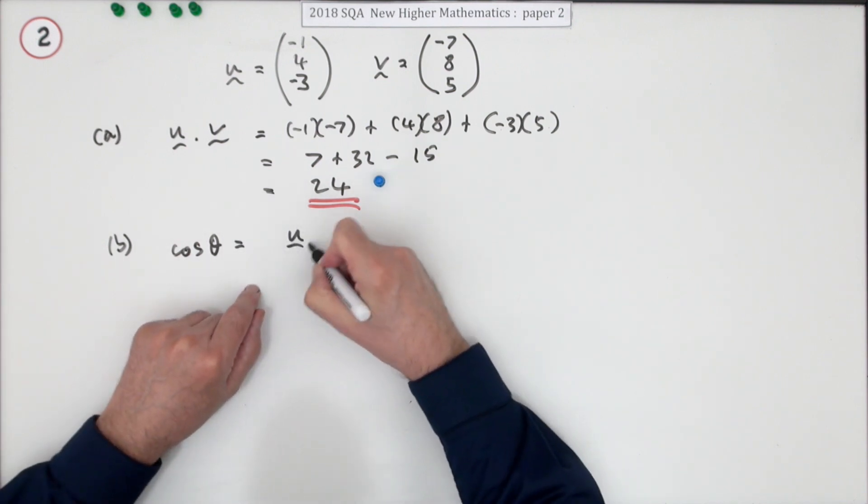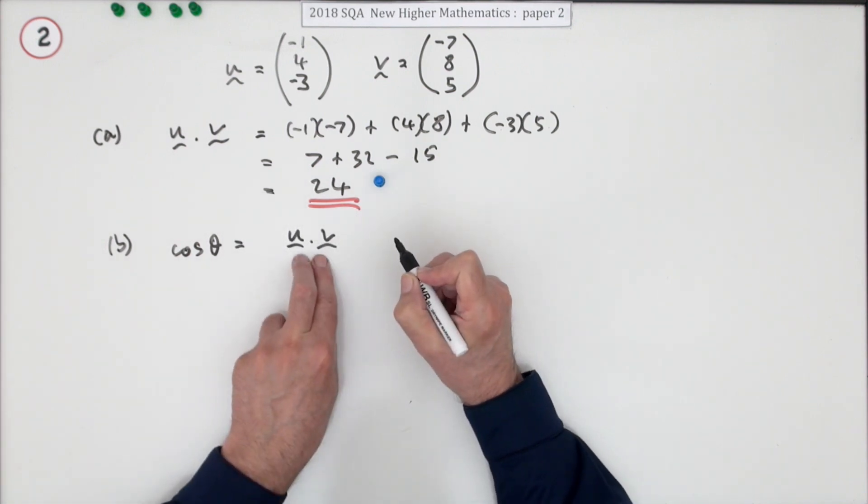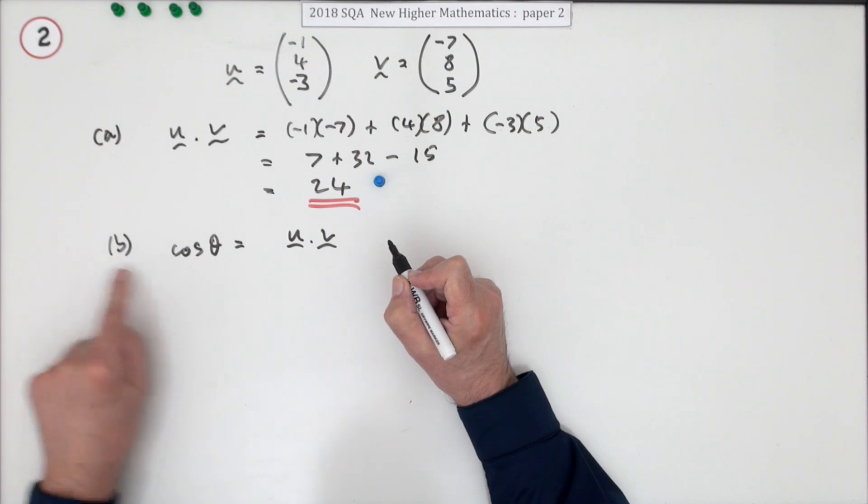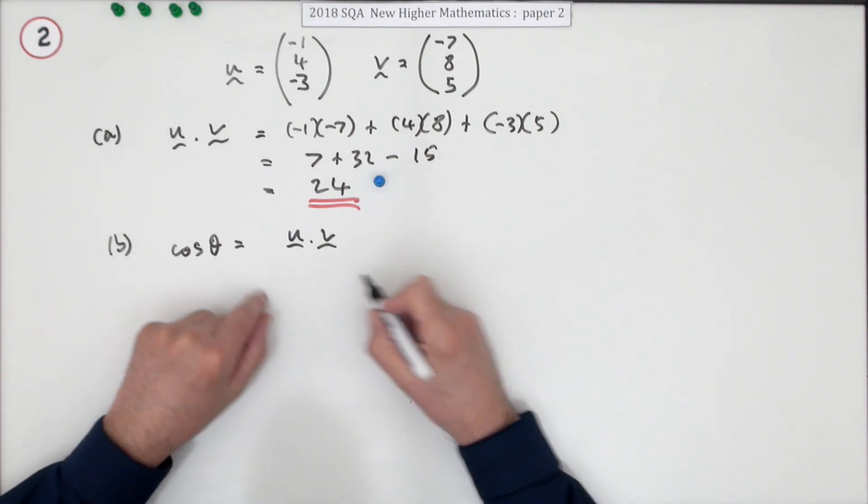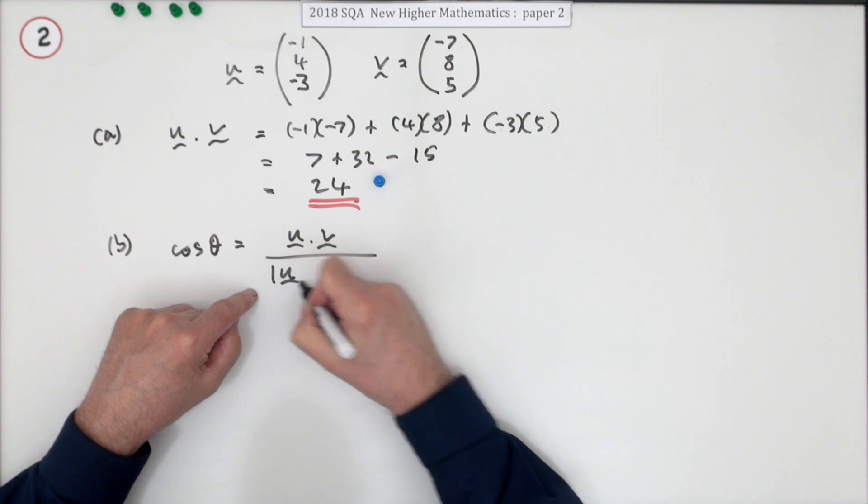The angle between them uses the scalar product, because the scalar product equals the length of one times the length of the other times the cosine of the angle in between. So I'll need their magnitudes.